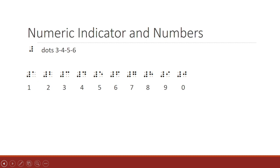Look at the numbers 1 through 9 and 0. The letter A preceded by the numeric indicator is 1. Number 2 is numeric indicator followed by dots 1, 2. 3 is numeric indicator followed by dots 1, 4. 4 is numeric indicator followed by dots 1, 4, 5. 5 is numeric indicator followed by dots 1, 5. 6 is numeric indicator followed by dots 1, 2, 4. 7 is numeric indicator followed by dots 1, 2, 4, 5. 8 is numeric indicator followed by dots 1, 2, 5. 9 is numeric indicator followed by dots 2, 4. And 0 is numeric indicator followed by dots 2, 4, 5.